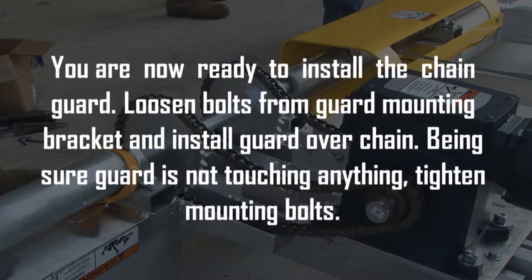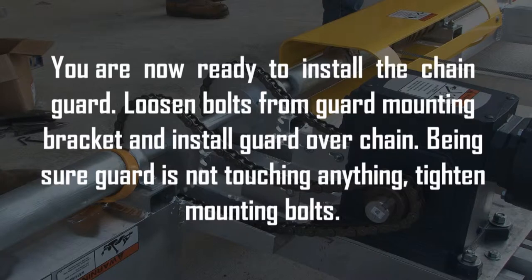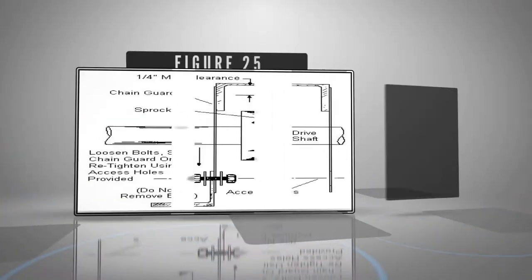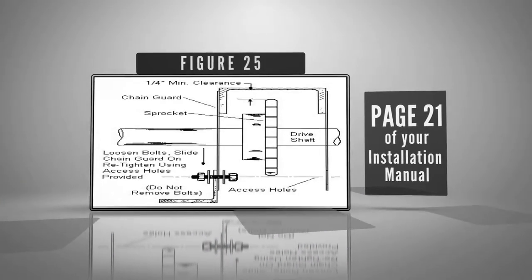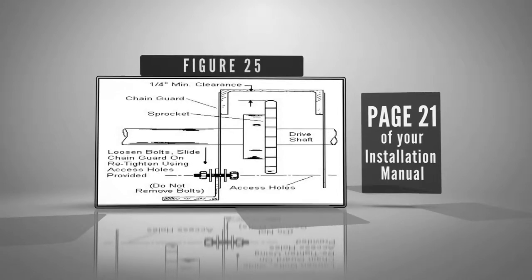You're now ready to install the chain guard. Loosen bolts from guard mounting bracket and install guard over chain. Being sure guard is not touching anything, tighten mounting bolts. See figure 25. Move control box inside building and out of the way for now.